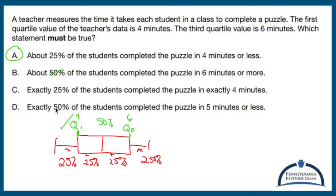And exactly 50% of the students completed the puzzle in five minutes or less. I don't know that. Now it's tempting. It's tempting to say that that is true because you might be thinking, well, that's four and that's six. So that number must be five. Well, no, we don't know that. We don't. We don't know that number. It could be, but we don't know.